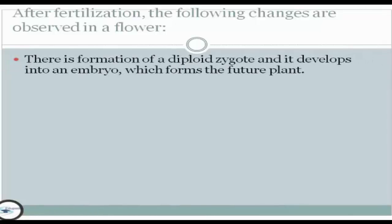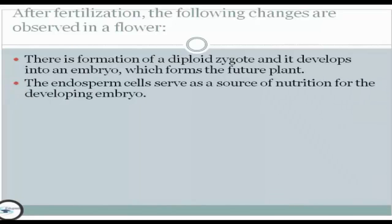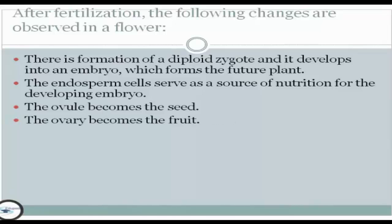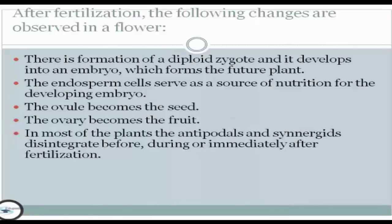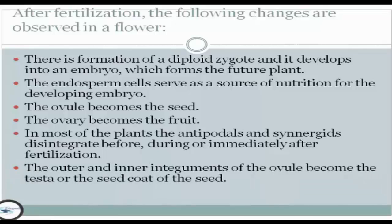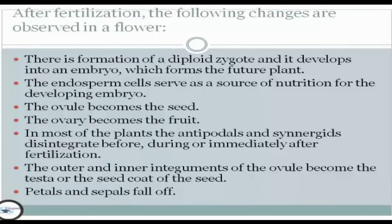First, there is formation of a diploid zygote, which develops into an embryo and forms the future plant. Second, the endosperm cells serve as a source of nutrition for the developing embryo. The ovule becomes the seed, and the ovary becomes the fruit. In most plants, the antipodals and synergids disintegrate before, during, or immediately after fertilization. The outer and inner integuments of the ovule become the testa, or seed coat. Petals and sepals fall off.